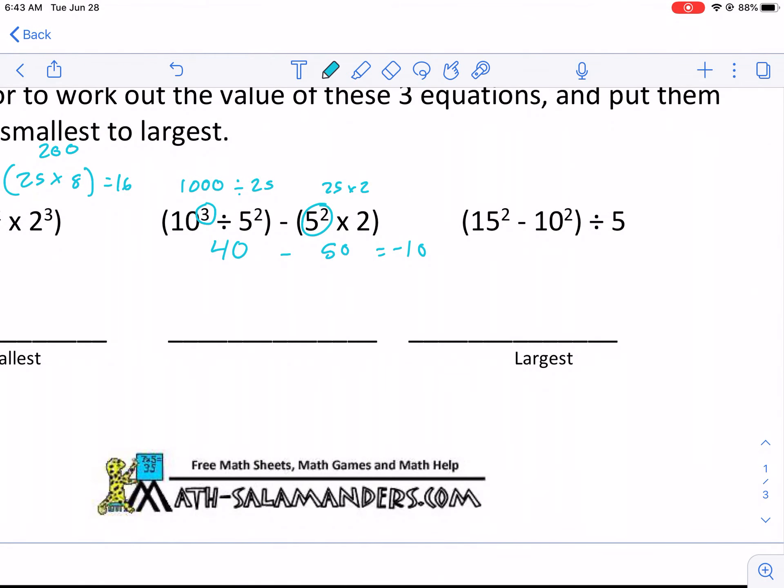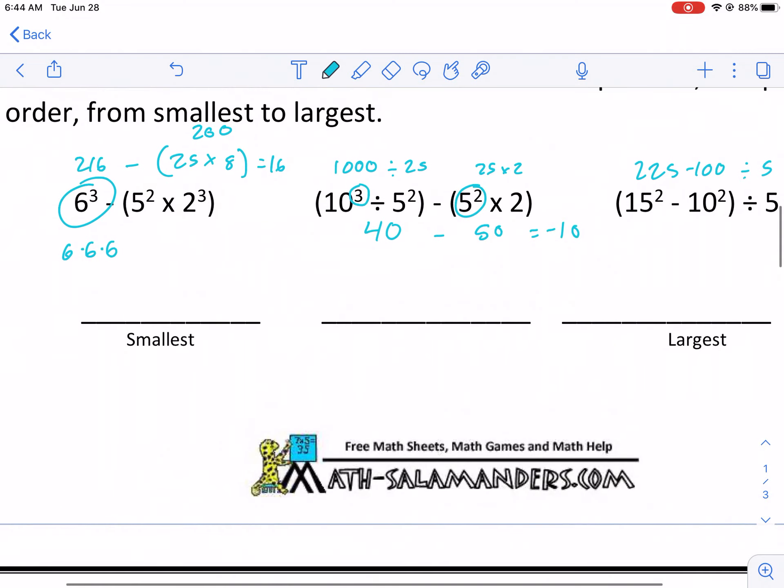Now we have 15². I believe that's 225. Minus 100. So we had 225 minus 100. And then we divide that by five. So 225 minus 100 is 125. So 125 divided by five should give us 25. And it is 25. So our least one is actually this expression.